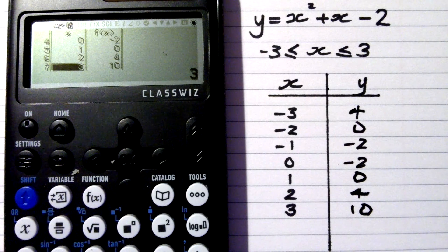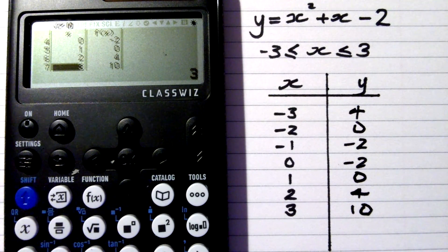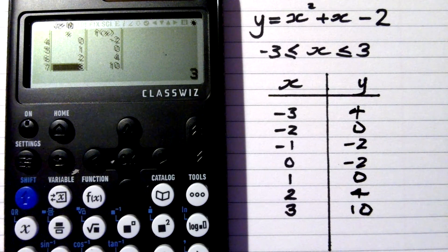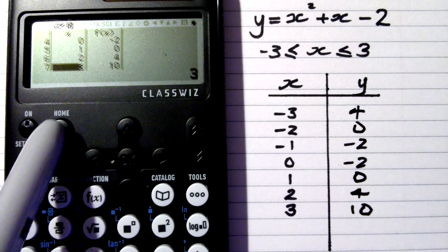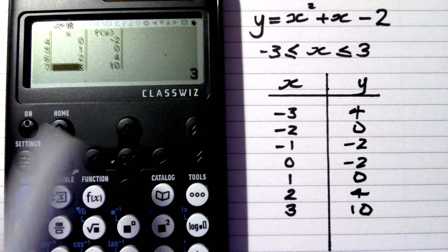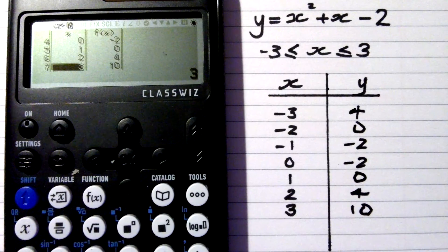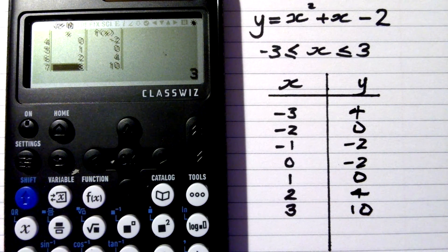And there we are — we have made a table on the FX-85GT, simple as that. The buttons you need to remember are the home button and the tools button to give the range. Michael signing off now. I hope that was a good use of four and a half minutes of your time.